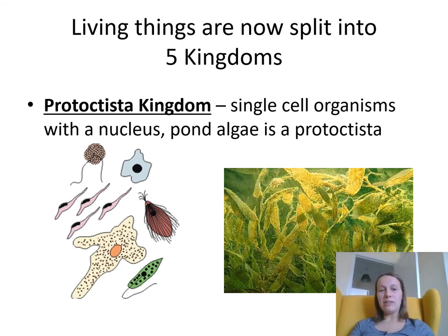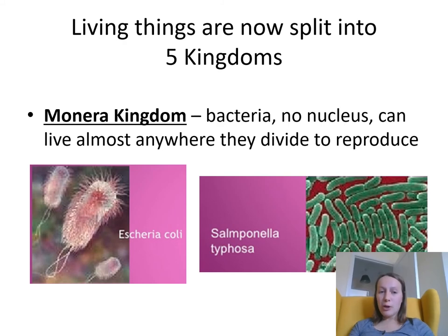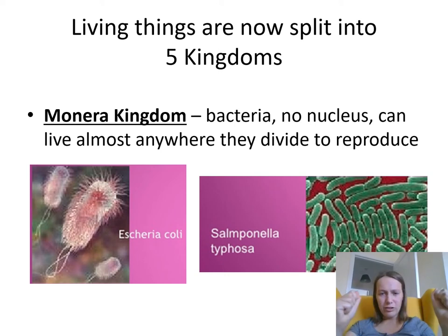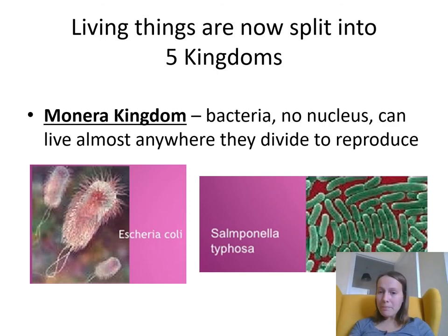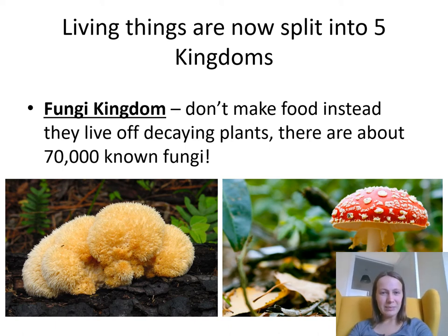Living things are now split into five kingdoms. Let's have a go at pronouncing this: the Protoctista kingdom — these are single-celled organisms with a nucleus, tiny little things you might see under a microscope. The Monera kingdom — things like bacteria that reproduce by splitting into two. The Fungi kingdom — mushrooms and toadstools. These are weird; they do all sorts of interesting things and reproduce by putting little spores out into the wild.